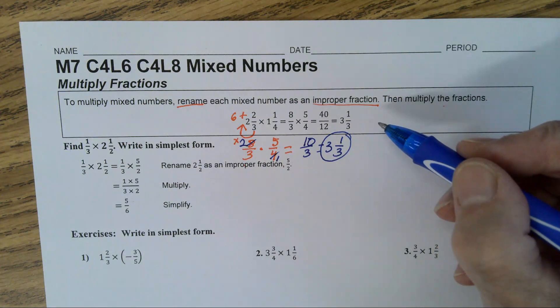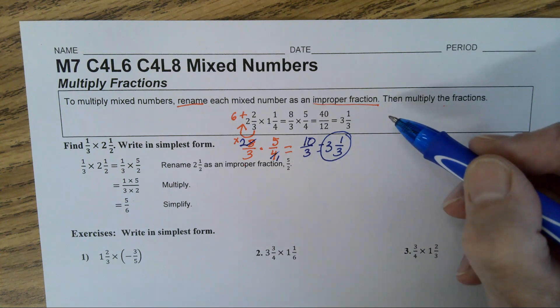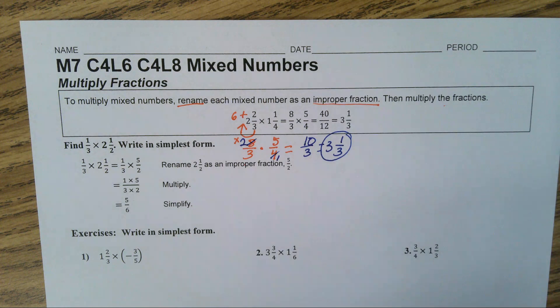Now in the example they didn't simplify before they multiplied. I like to do that because it is an easier process in the end. Now let's go look at the example that's provided.